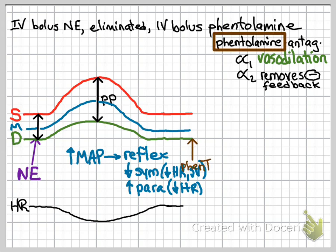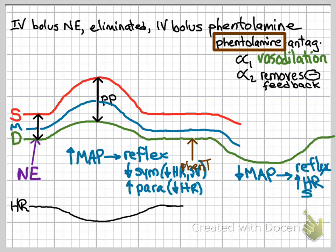We're going to administer phentolamine at the brown arrow, and we see the expected vasodilation producing a decrease in diastolic pressure. Systolic pressure also begins to decline, as it is built on top of diastolic pressure, and mean arterial pressure declines as well. As a result of this decrease in blood pressure, we see a reflex increase in sympathetic activity and a reflex decrease in parasympathetic-mediated effects on heart rate, so overall you would expect to see an increase in heart rate and contractility.